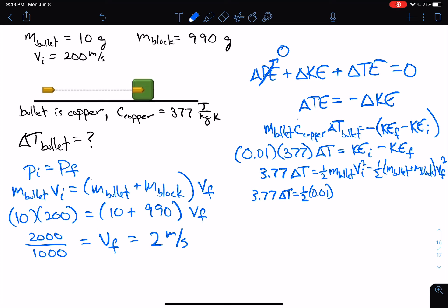The initial speed is 200, so 200 squared minus 1/2. Now I already know that the mass of the bullet plus the mass of the block, we already figured out, that's 1,000 grams, which is 1 kilogram, so that's just 1. And V final is 2, so 2 squared.